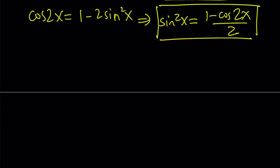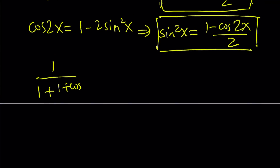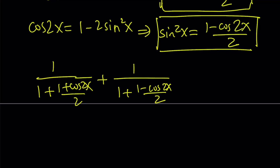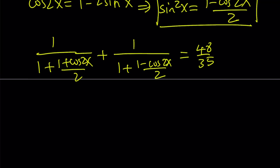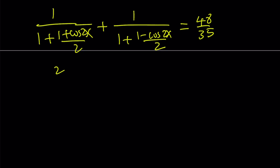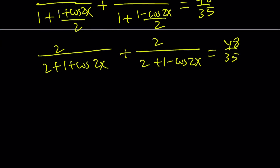Let's see how this plays out. We get 1 over 1 plus cosine squared x, which becomes 1 over 1 plus (1 plus cosine 2x)/2, plus 1 over 1 plus (1 minus cosine 2x)/2. Multiplying the top and bottom by 2 gives us 2 divided by 2 plus 1 plus cosine 2x, and 2 divided by 2 plus 1 minus cosine 2x. This is nice because we'll be getting a difference of two squares, which simplifies easily.